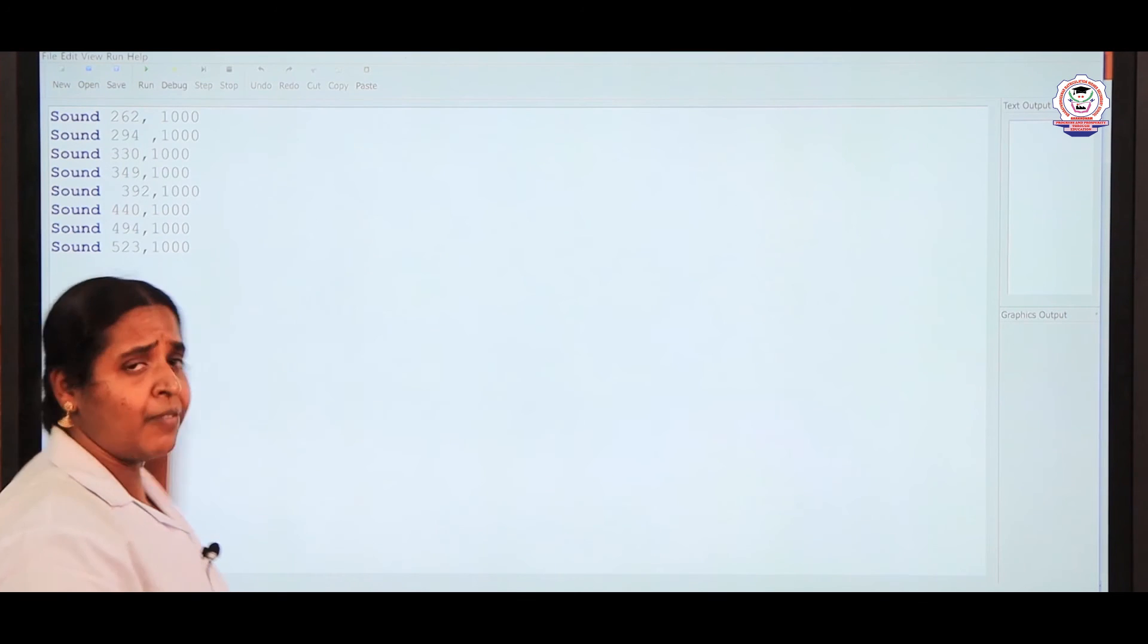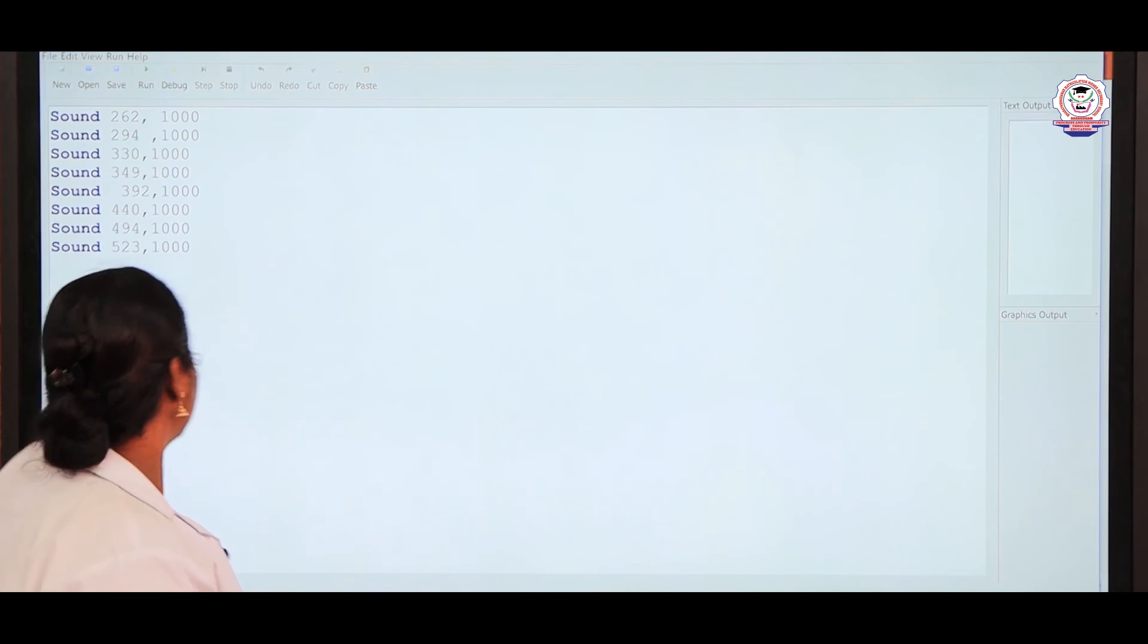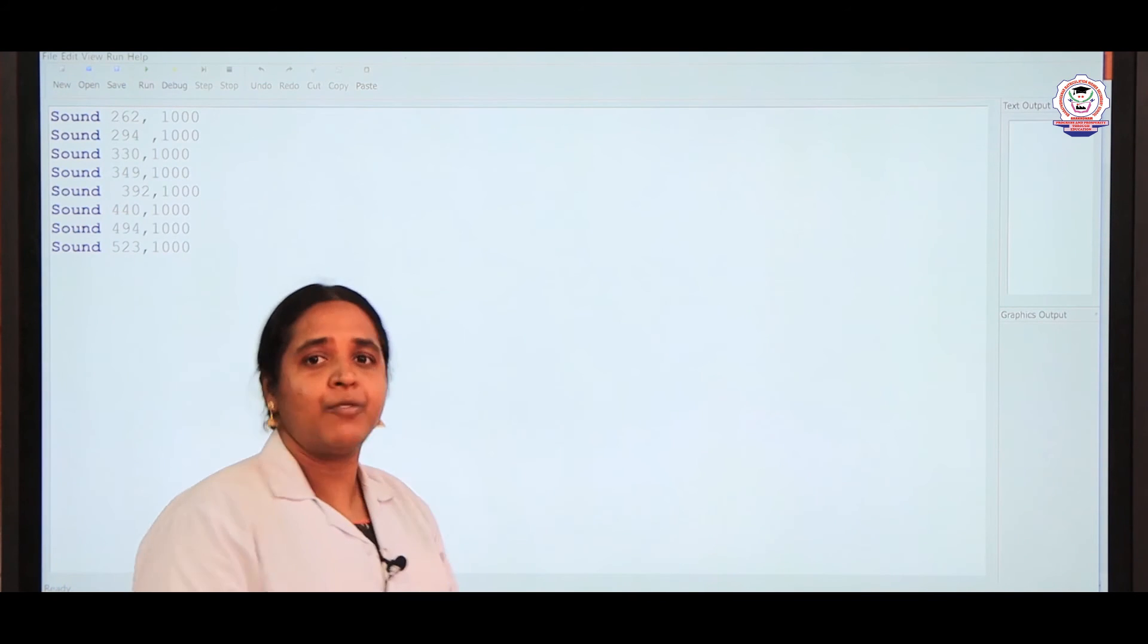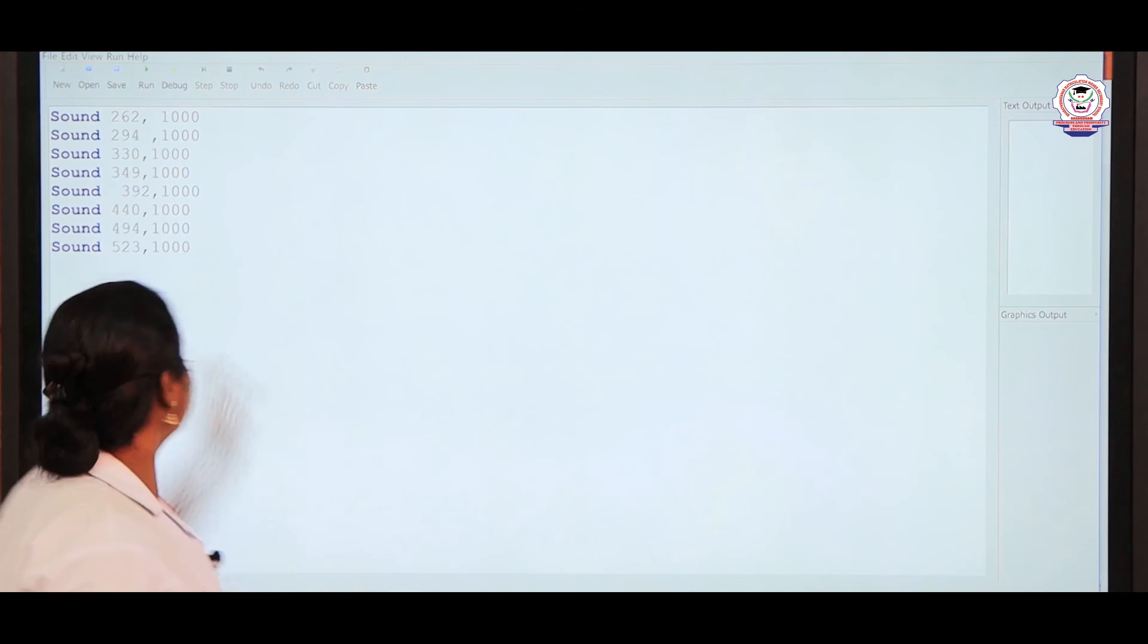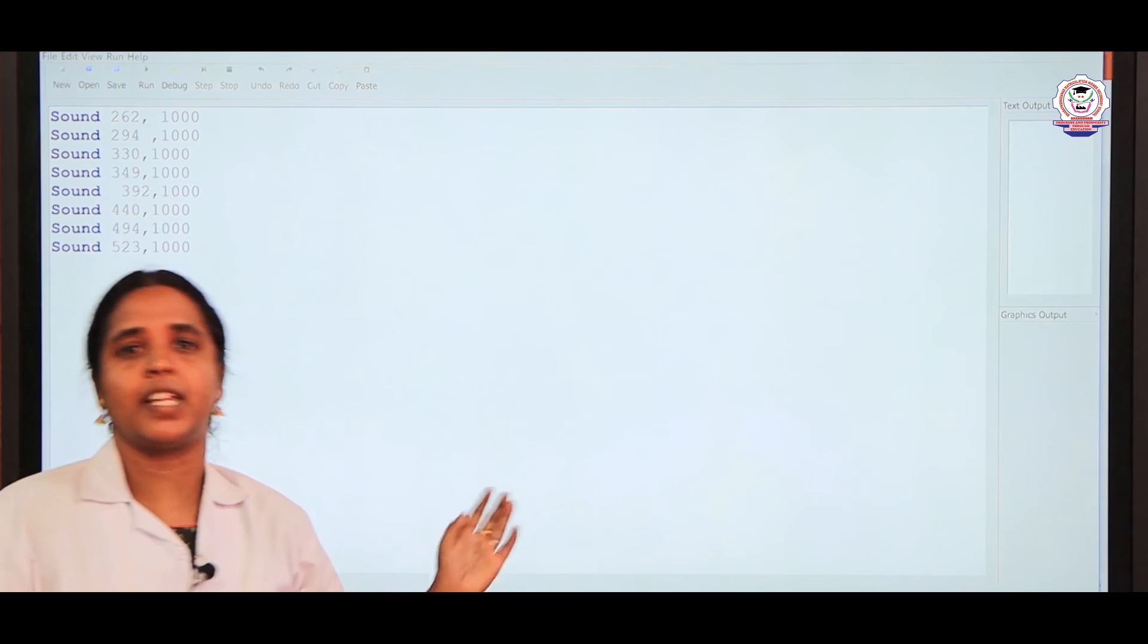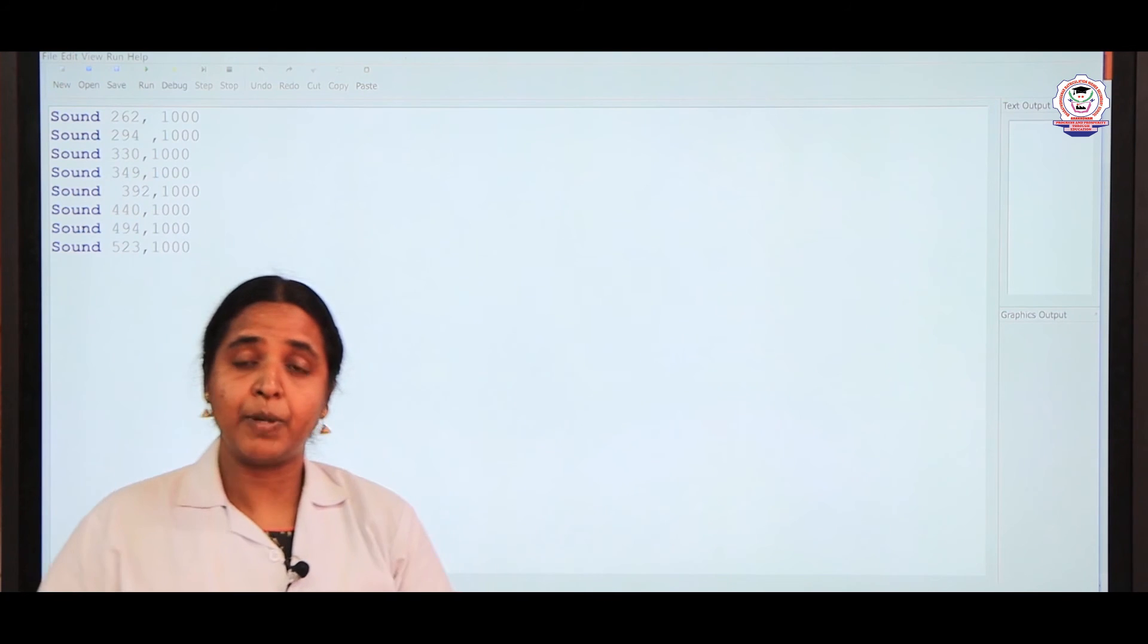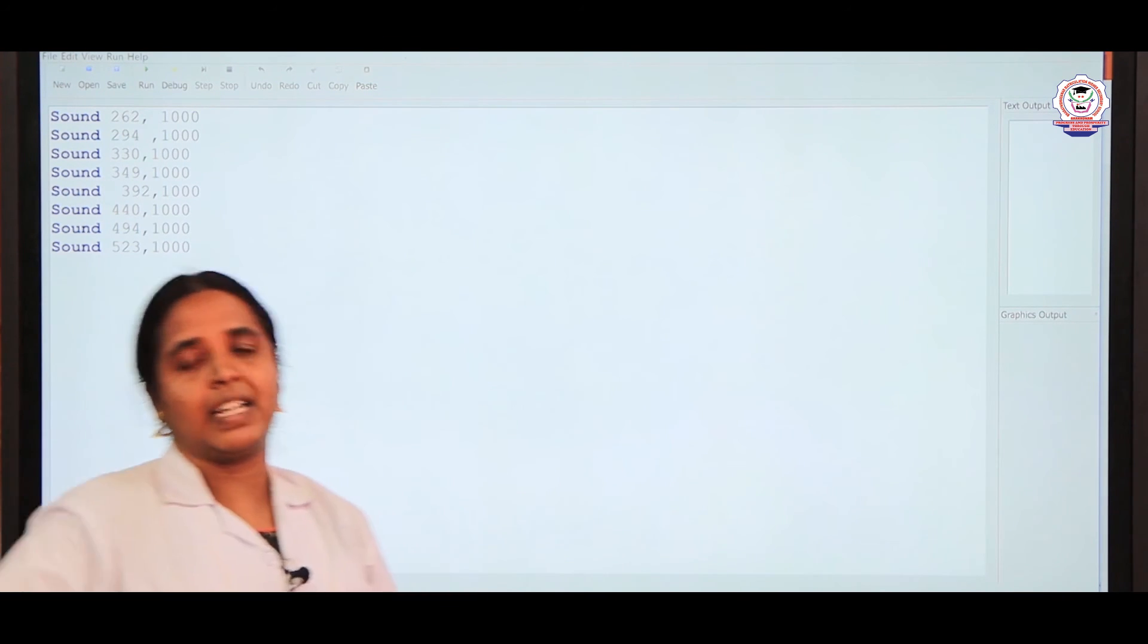We can simplify the program also. If we simplify, first you can give only one sound, then you have to open the curly braces. After that you have to give the frequency ranges and the time duration. Under the only one sound key you open the curly brace, then you give the frequency ranges and time duration. It is very simple to write the program and very interesting to run.